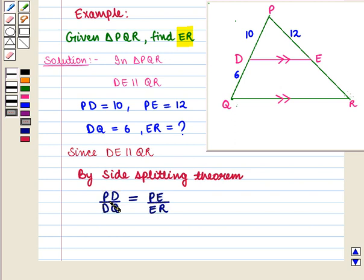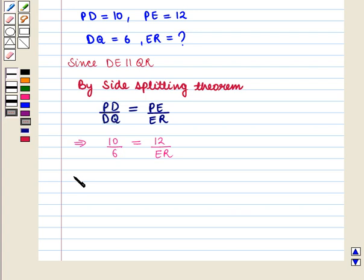Now, substituting all these values here, we get 10 upon 6 is equal to 12 upon ER. This implies that ER is equal to 12 into 6 whole upon 10.